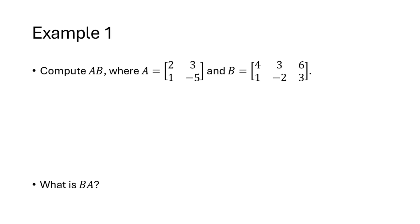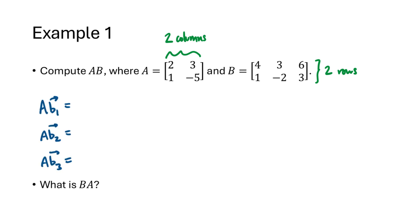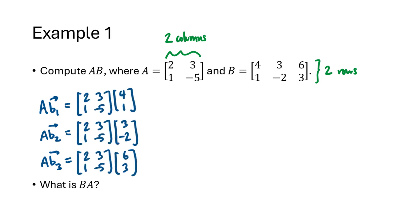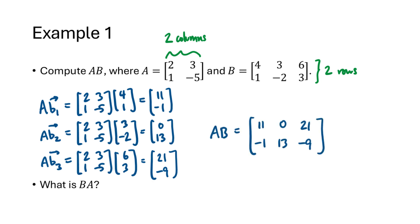Let's work through an example. A is a 2×2 matrix and B is a 2×3 matrix. To compute A times B, we first check: A has 2 columns and B has 2 rows — those match, so the product is defined. The columns of AB are A times each column of B: A·b₁, A·b₂, and A·b₃. Collecting those three products gives us AB as a 2×3 matrix.